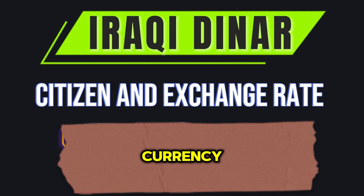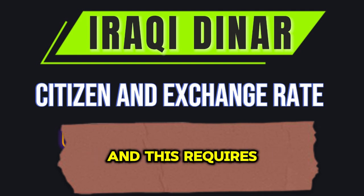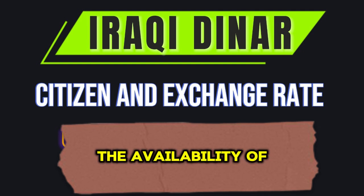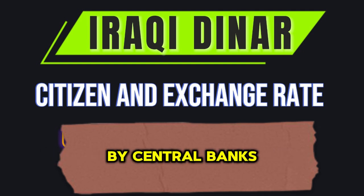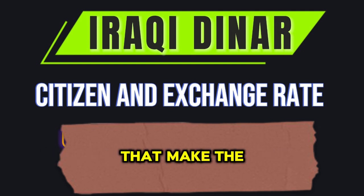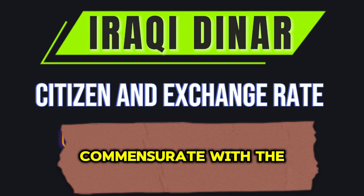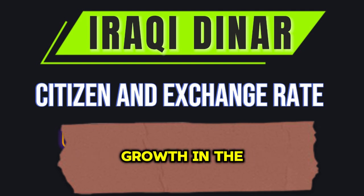There is a correlation between price stability and the value of the national currency, and this requires the availability of a wise monetary policy, undertaken by central banks that make the growth in the money supply commensurate with the growth in the gross domestic product or national income.